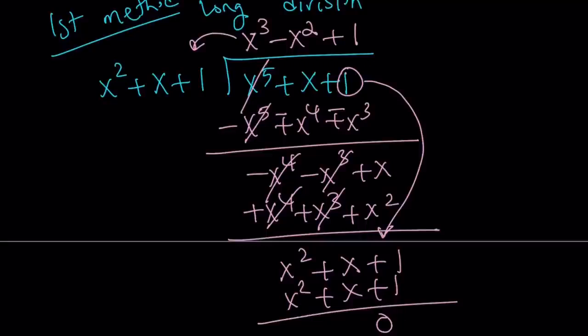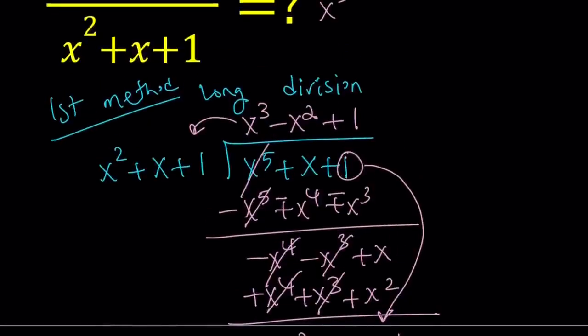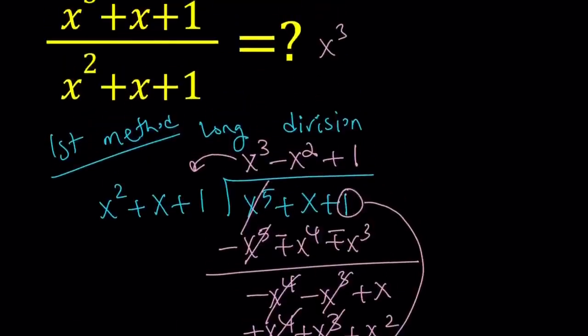Awesome. Hopefully, this makes sense, and we get the answer, right? So the answer is x cubed minus x squared plus one. So when you divide, you get that.